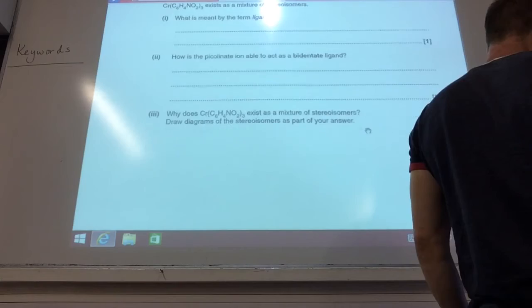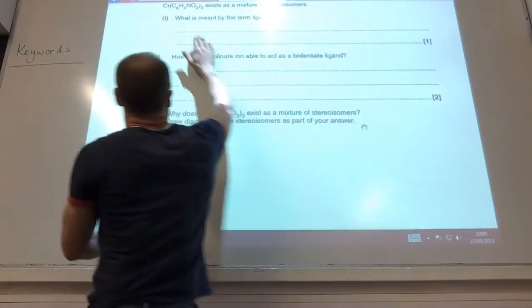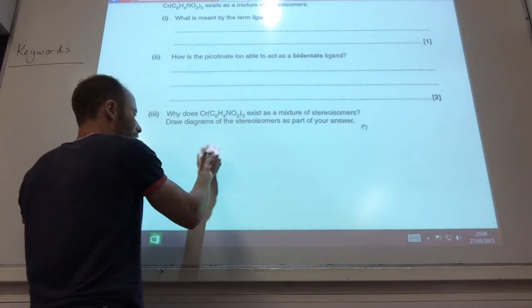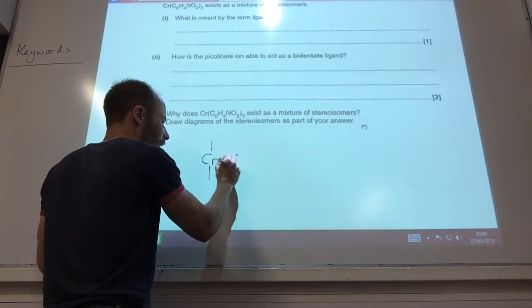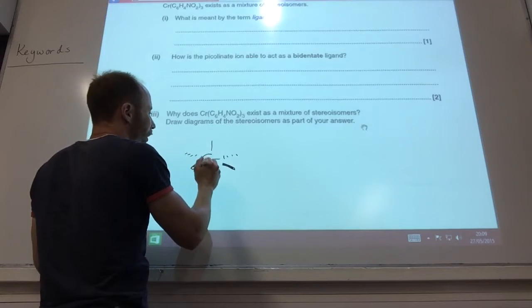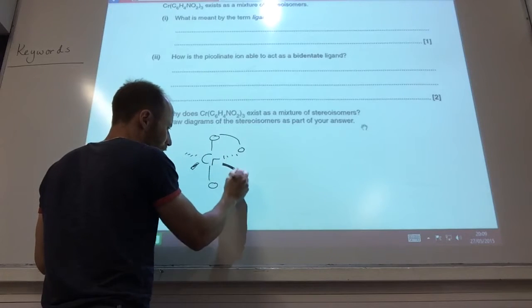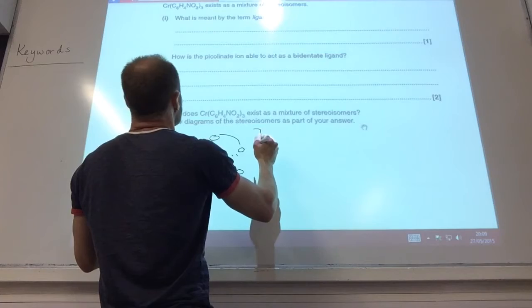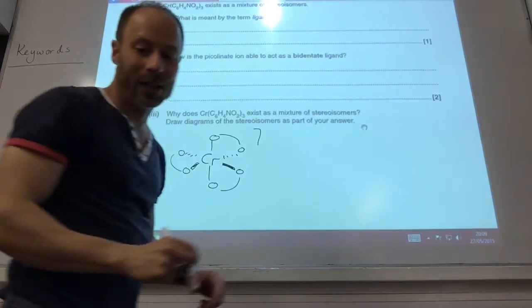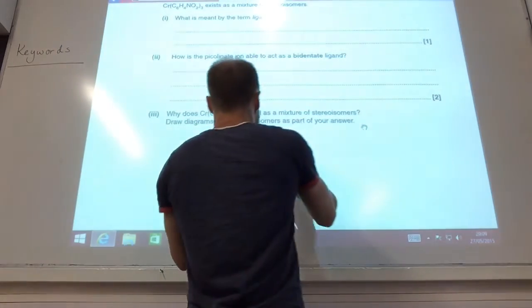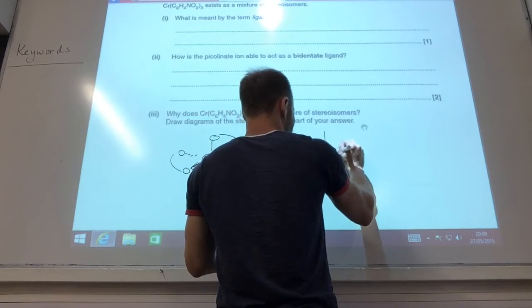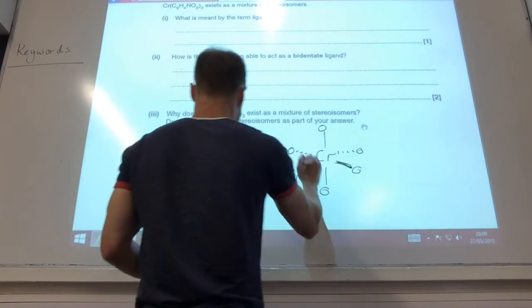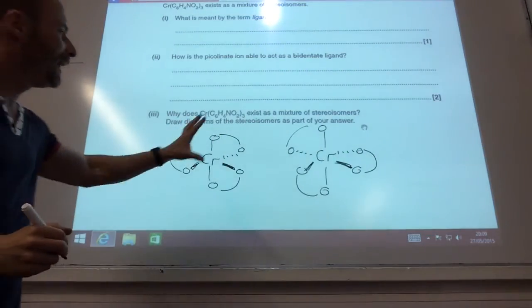Why does it exist as a mixture of stereoisomers? Notice it's a bidentate ligand, and I've got three bidentate ligands surrounding my chromium. So it's going to form optical isomers, like so. Now, try not to, so if they let you simplify it, which they do here, you can quite easily just do it like that. I'm just trying to think, it is actually neutral. And then the next one is going to be like that. These are optical isomers.